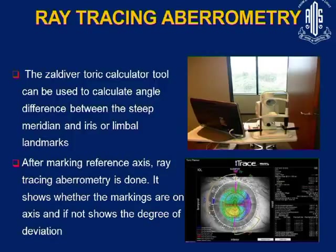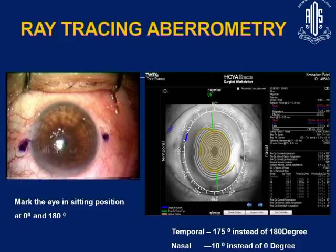This is Ray Tracing Aberrometry, which uses a Gel-Diver Caliper tool to calculate the angle difference between the steep meridian and iris or limbal landmarks. You mark the eye at 0 and 180 degrees, then use the Ray Tracing Aberrometer, which will tell you how far off the axis you are. According to that measurement, you can calculate the correction using the Gel-Diver Caliper.